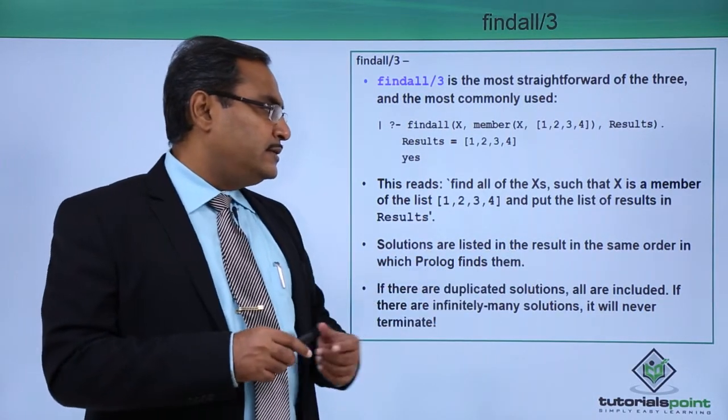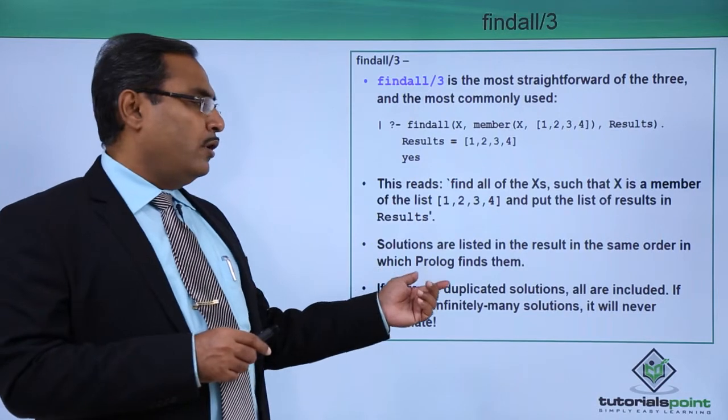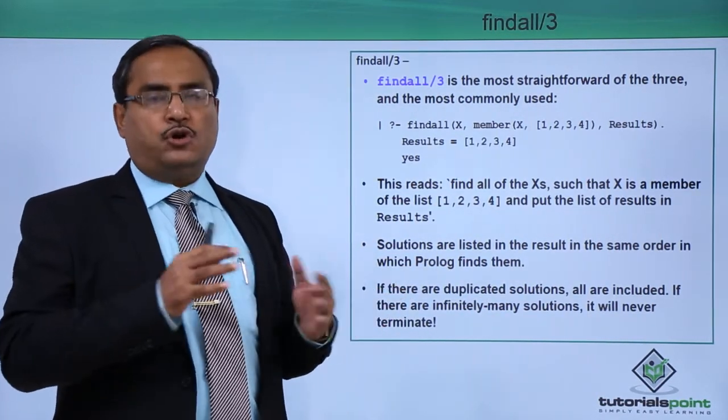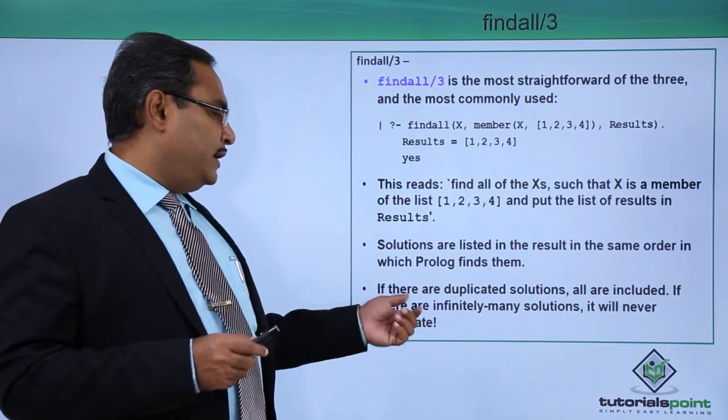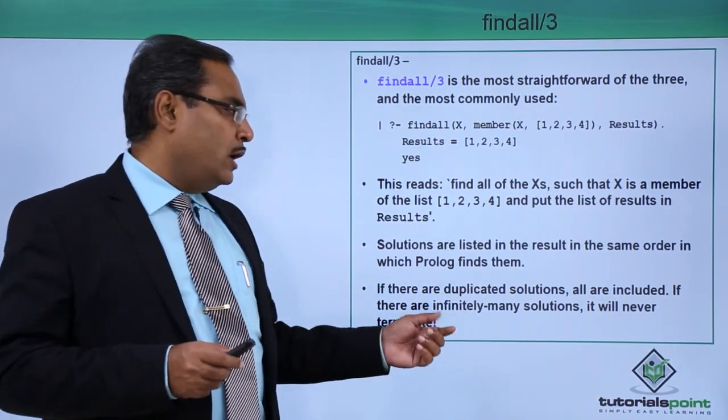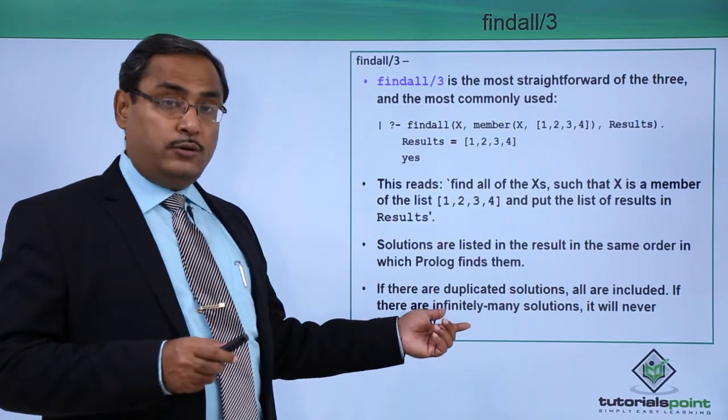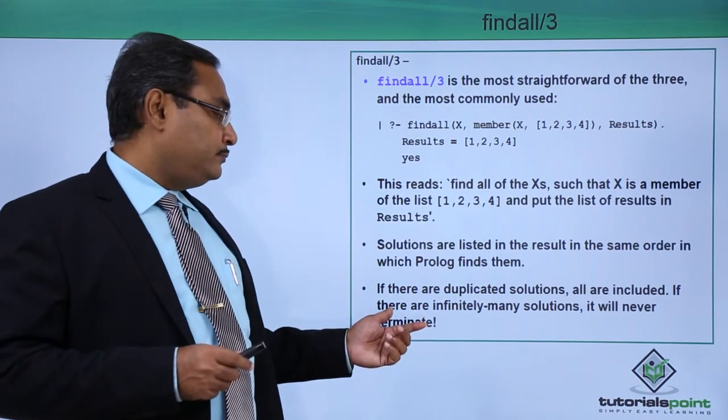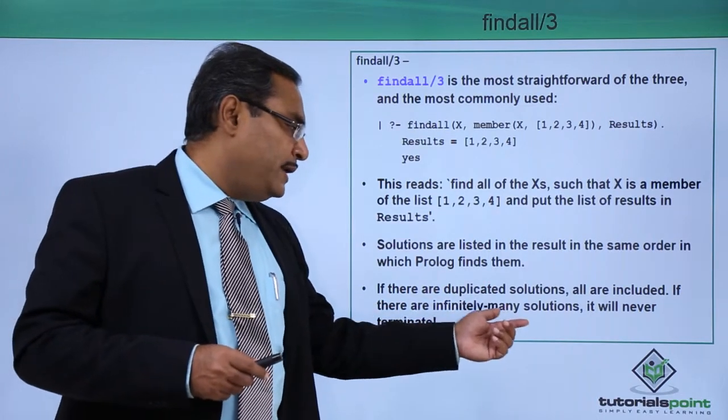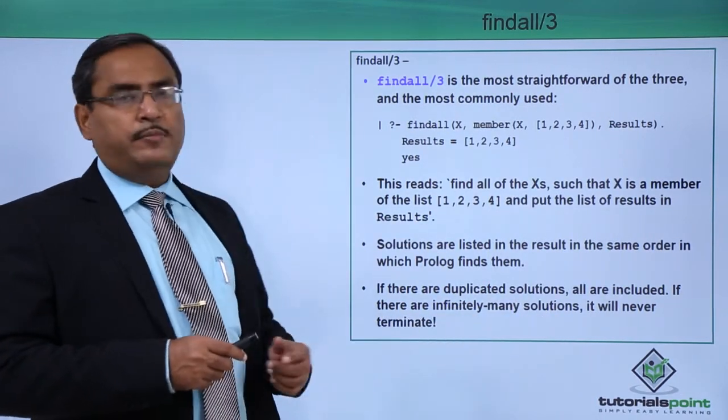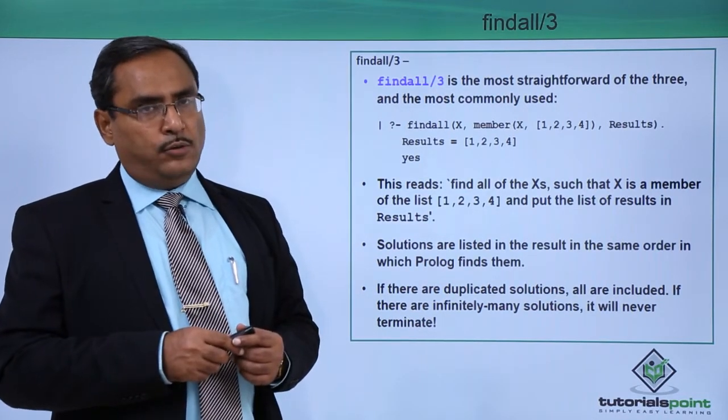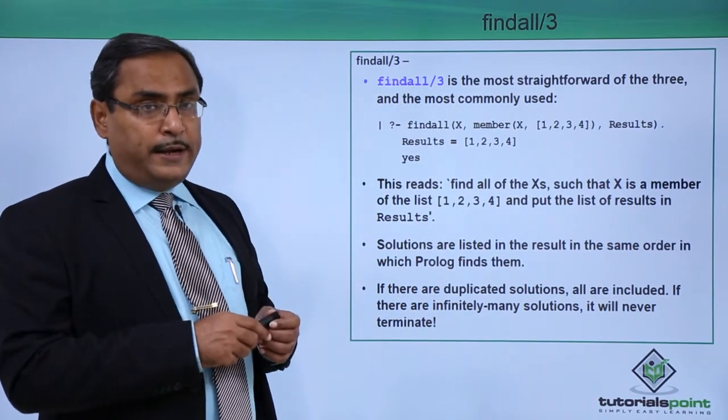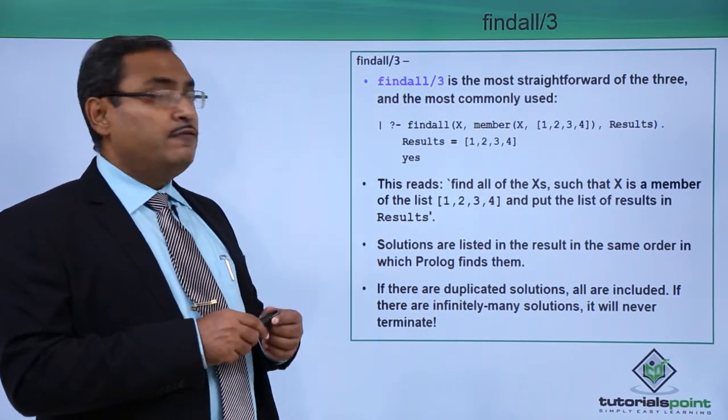Solutions are listed in the result in the same order in which Prolog finds them. So it is not going to do some reordering or sorting or something. If there are duplicate solutions, all are included. If there are infinitely many solutions, it will never terminate and it will go on populating and accumulating. In this way we are getting the details about this inbuilt predicate in Prolog, that is findall.